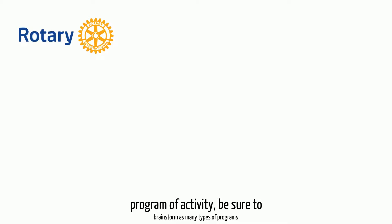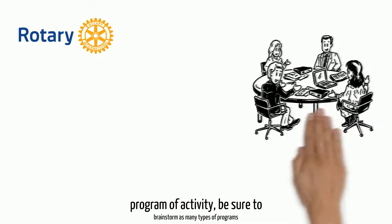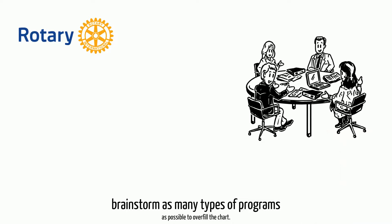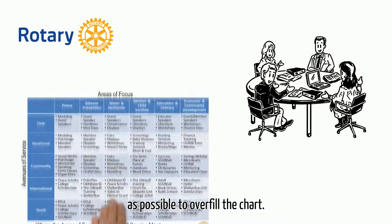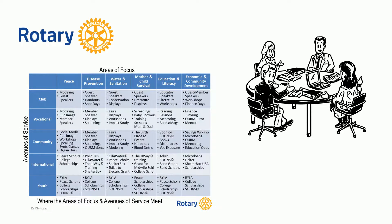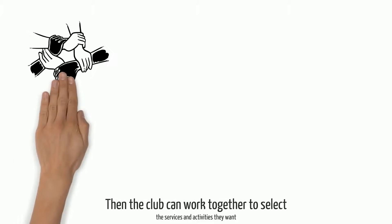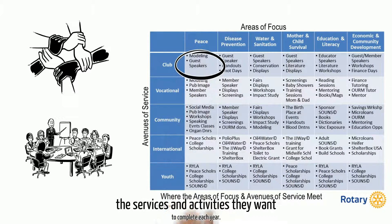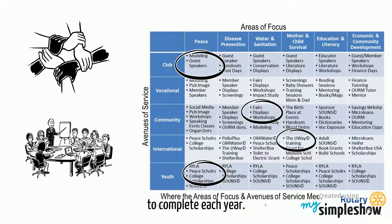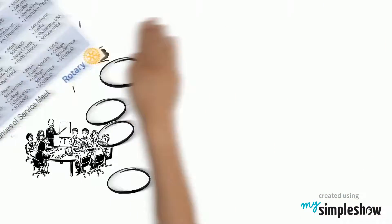In order to have a well-rounded Rotary program of activity, be sure to brainstorm as many types of programs as possible to overfill the chart. Then the club can work together to select the services and activities they want to complete each year.